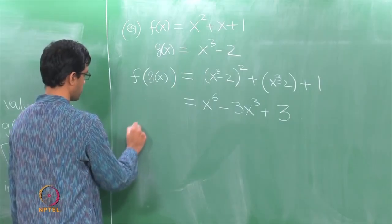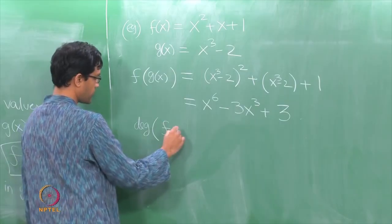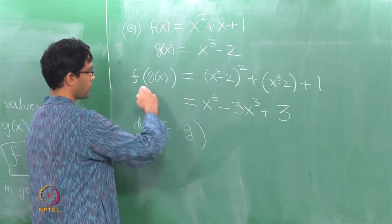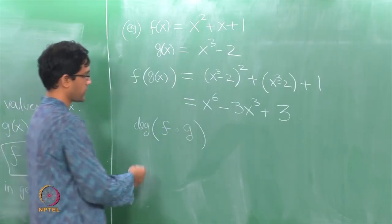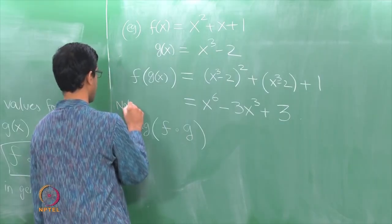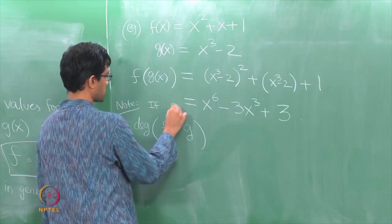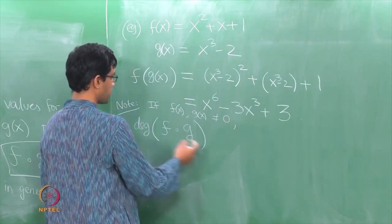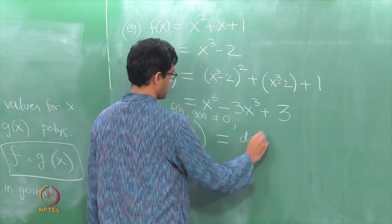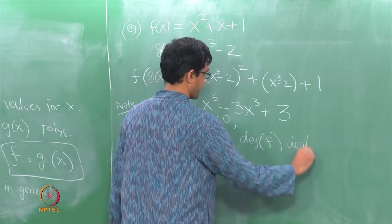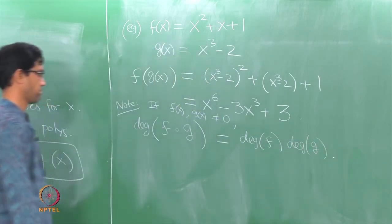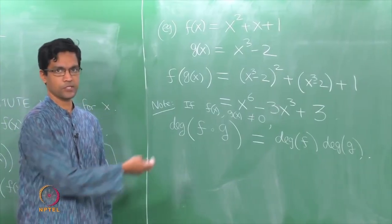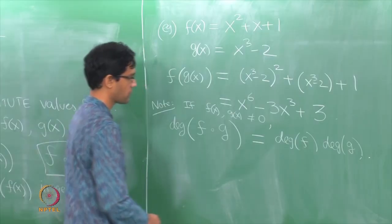What are the key properties? Observe that the degree of f circle g — in this case one polynomial was degree 2, the other was degree 3, and their composition had degree 6. This is true in general: if f and g are non-zero polynomials, the degree of their composition is the product of their degrees. I will leave this as an exercise for anyone who wants to check.